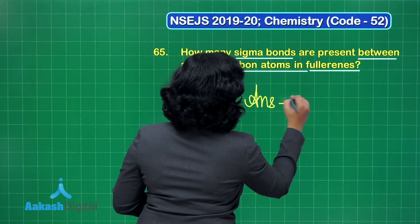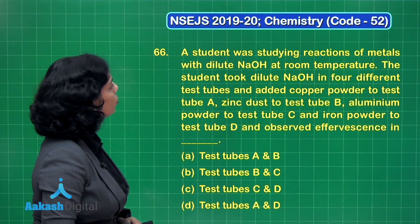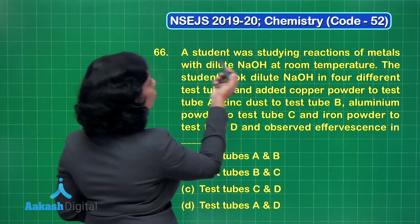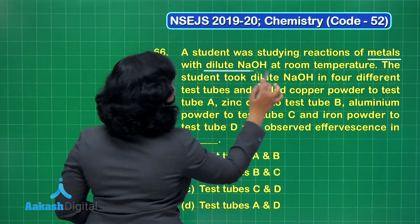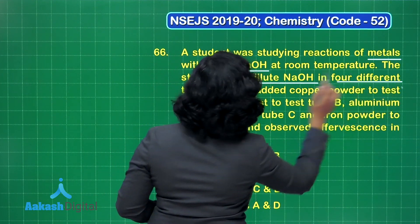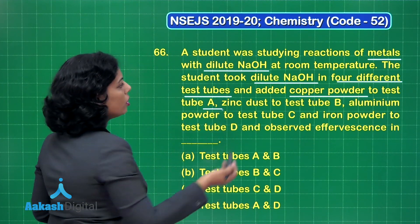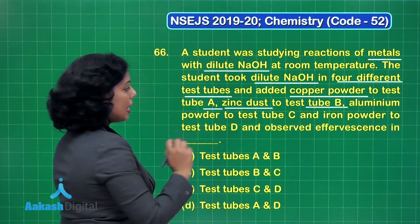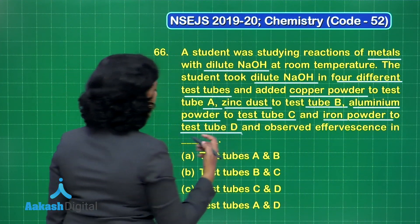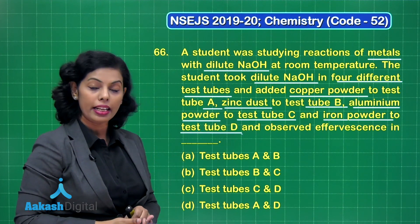Question number 66: a student was studying reactions of metals with dilute NaOH at room temperature. The student took dilute NaOH in four different test tubes: test tube A has copper powder, test tube B has zinc dust, test tube C has aluminum powder, and test tube D has iron powder. We need to identify in which test tubes effervescence was observed.